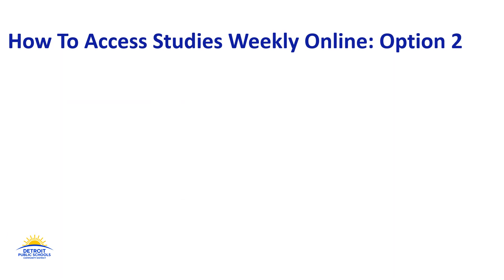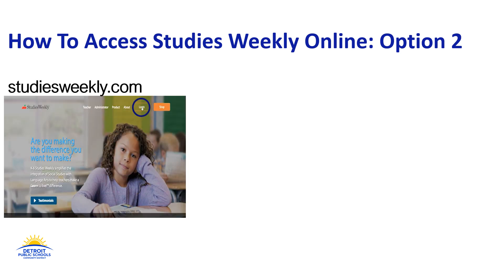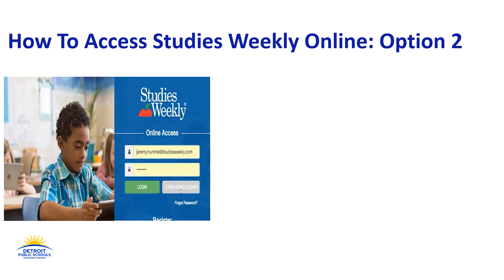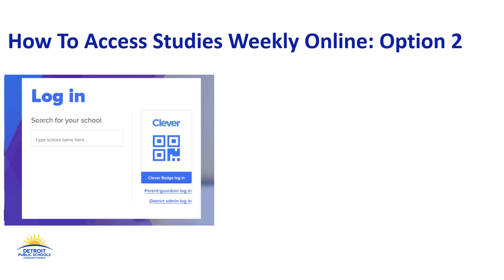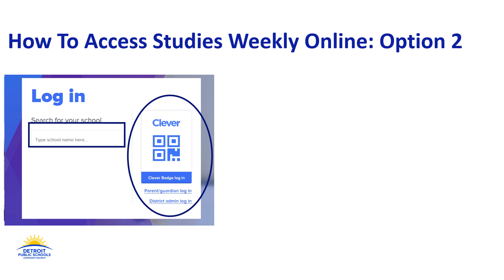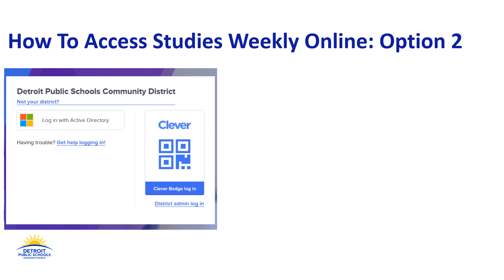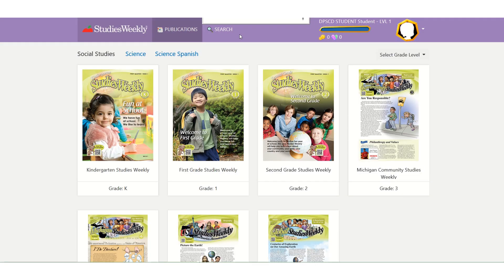There are two different ways you can access Studies Weekly online. One way is to go to studiesweekly.com and click 'Log in,' then click 'Log in using Clever.' You can either scan your QR code or, if you don't have your QR code, you can search for your school to continue logging in. Once your school has been selected, continue logging into Clever with your username and password. Once you've gained access to Studies Weekly online, this is the screen you will see — be sure that your name is shown in the top right corner.